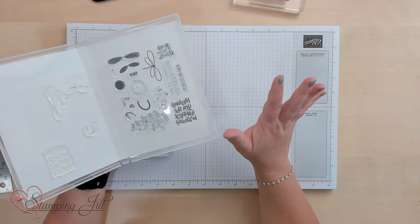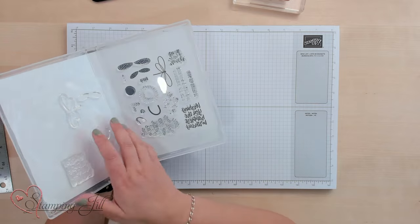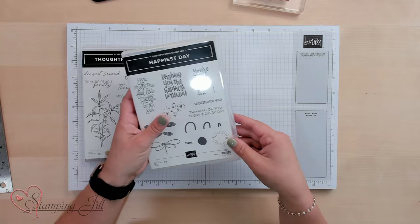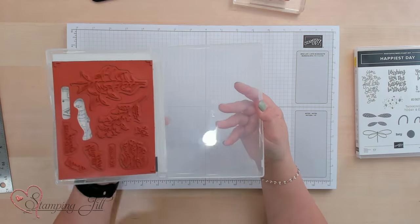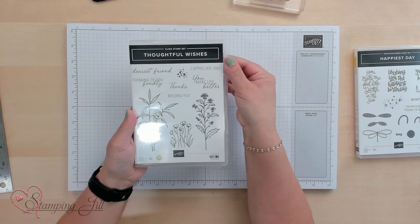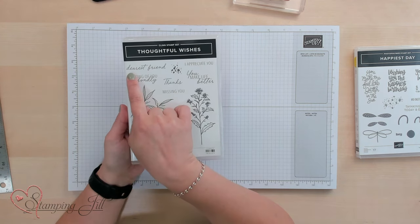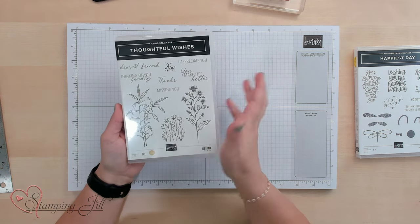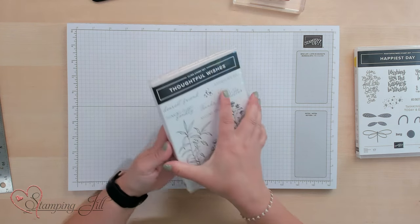But we still have rubber stamps as well, and they still have a place in our lives. If you have stamps that are years old and you've used over the years, they're more than likely going to be a rubber stamp. So I wanted to just give you some quick tips on how to line up those rubber stamps. I'm using the Thoughtful Wishes cling stamp set. I thought this was a great one because it has both cursive writing and regular just printed writing. So let's get started.